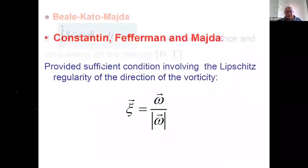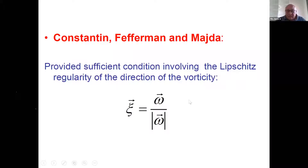There is a more refined condition by Constantin-Fefferman-Majda: if you control the direction of the vorticity rather than the vorticity itself — essentially a Lipschitz-type condition on that direction — then you have regularity for the Euler equation. I am going through these quickly as a reader's digest of landmarks; many important results are being omitted.